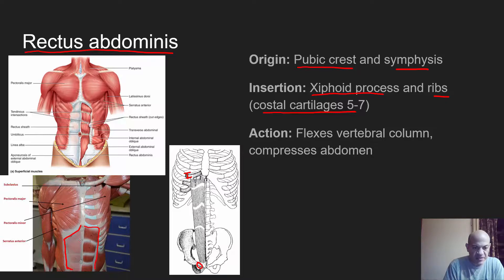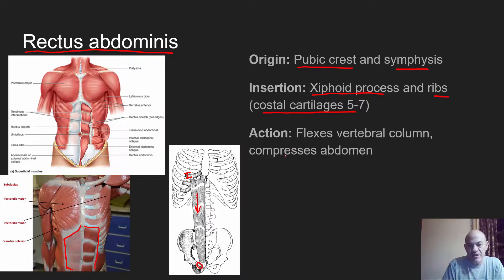The part on the left has some of the connective tissue removed. When the muscles contract, the action is basically pulling down on the insertion, which helps cause flexing of the vertebral column — like when you're doing crunches. The rectus abdominis can also help to compress the abdominal cavity.